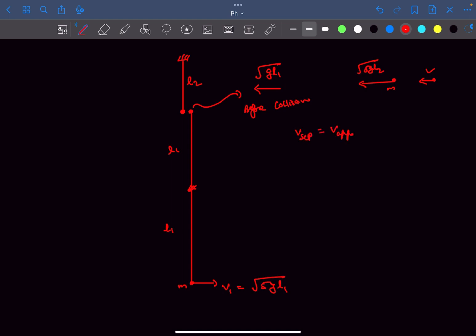Now as the collision is given to be elastic, we can say the separation velocity of the two masses equals the approach velocity of the two masses. So the separation velocity from here is root 5gl2 minus v, and the approach velocity is simply root gl1. We can also conserve momentum before and after collision, so we can say m root gl1 equals m root 5gl2 plus mv.